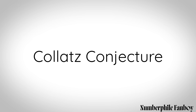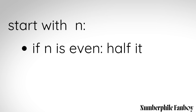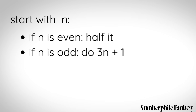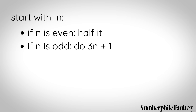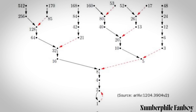The Collatz conjecture is based on two simple rules: start with a number n; if n is even then divide it by two; if n is odd then multiply by three and add one. Repeat the process again and again, and the conjecture is that no matter what number you start with, you'll eventually end up with one. To this day, no one has proven it to be true or false.